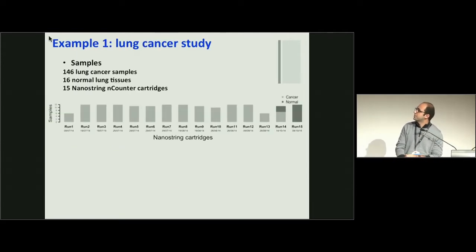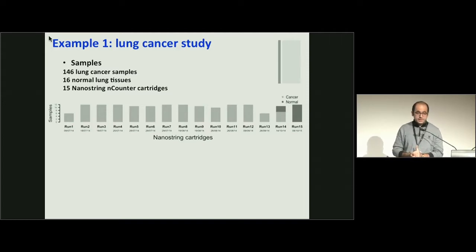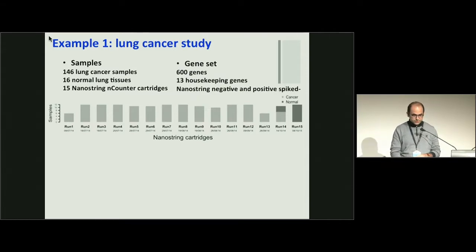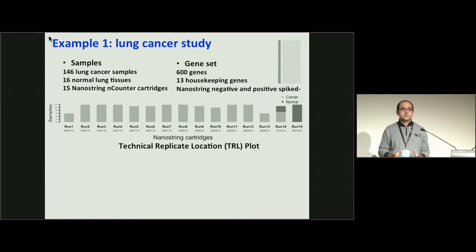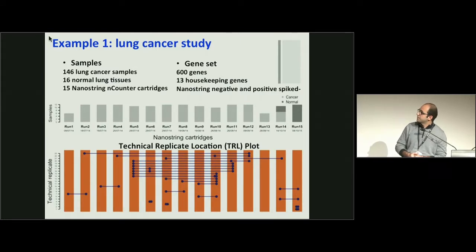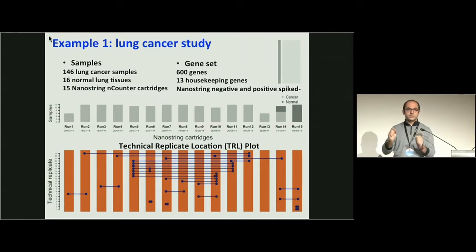Let's start with the first example. We have 146 samples and 16 normal tissues. Data was generated using 15 NanoString cartridges, and a majority of cartridges have 12 samples. We have 600 genes, 13 housekeeping genes, and NanoString negative and positive spiking controls. It's great that we have some technical replicates - they are extremely useful to estimate batch-to-batch variation. Here is a technical replicate location plot, where each two points connected by a line represent one technical replicate.